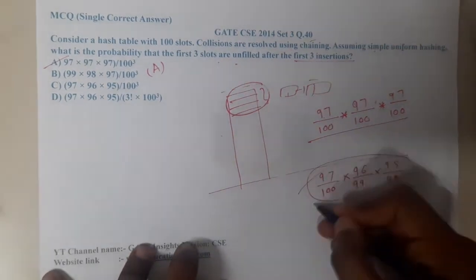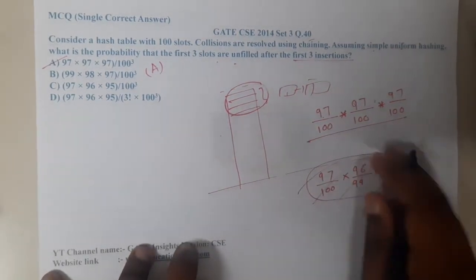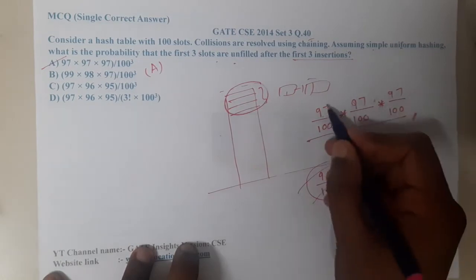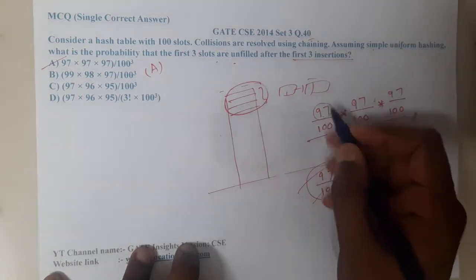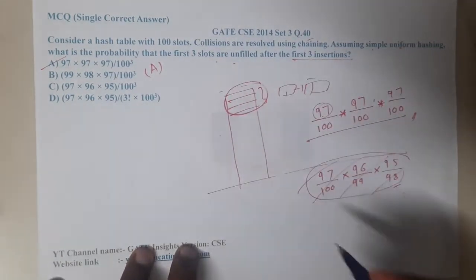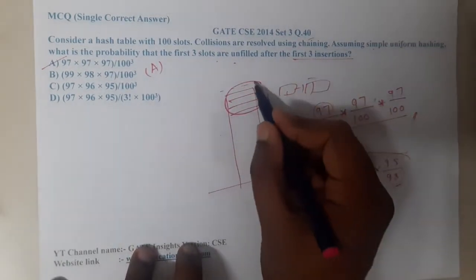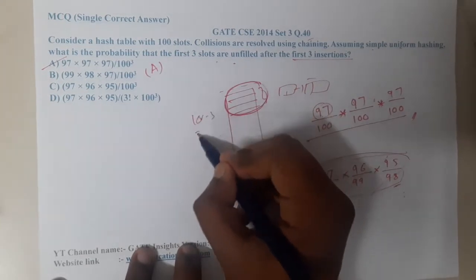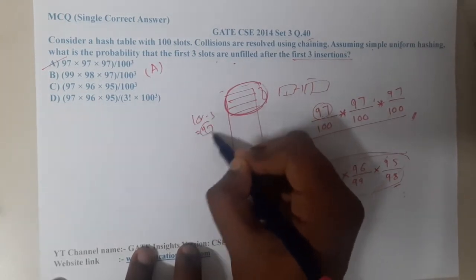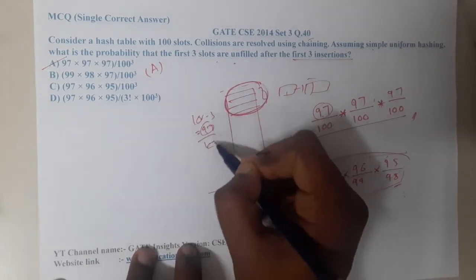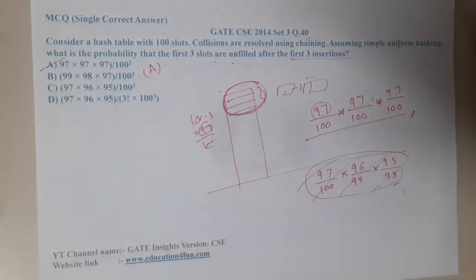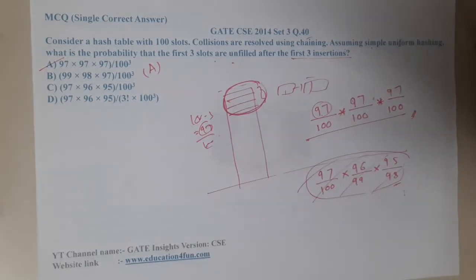Since we are using chaining, the answer is 97/100 cubed. We have exactly 97 available slots each and every time because we are not inserting at those three locations — 100 minus 3 is 97, and the total is 100. So 97 slots are allowed each time.